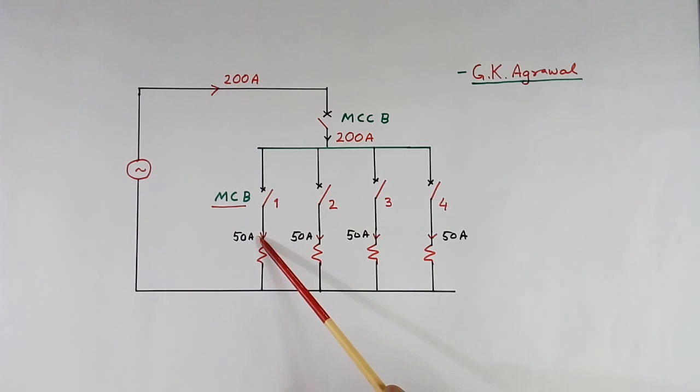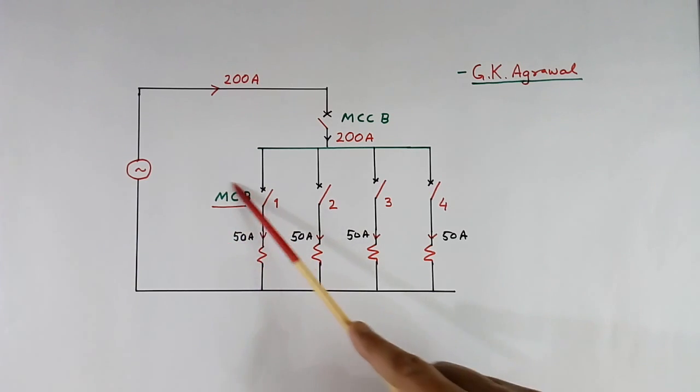Now suppose the rating of this MCB will be much less than the MCCB. This will be about, if the load is 50 A, it may be about 63 A.